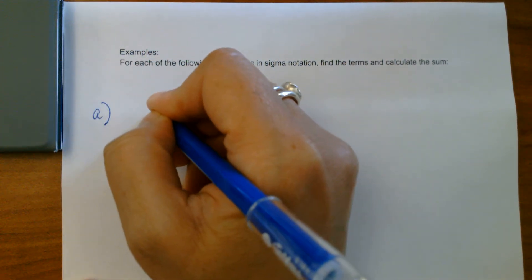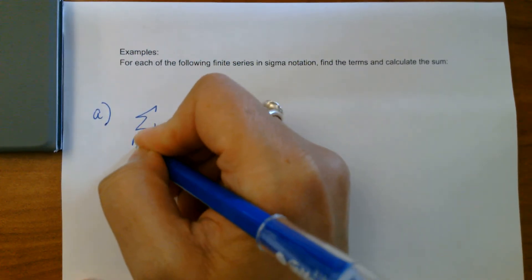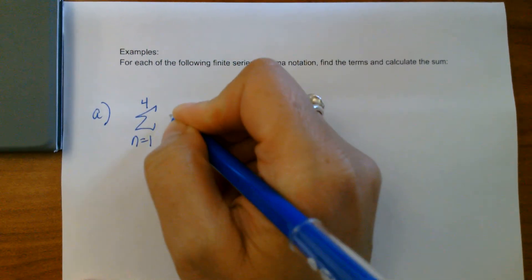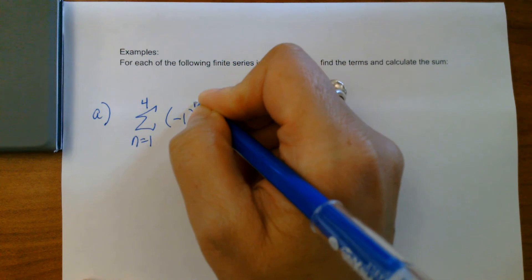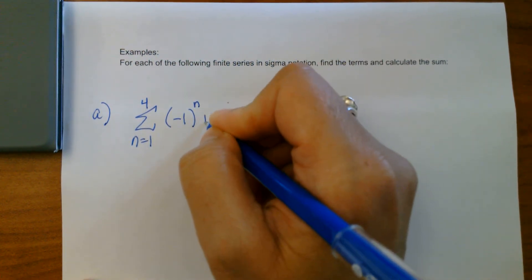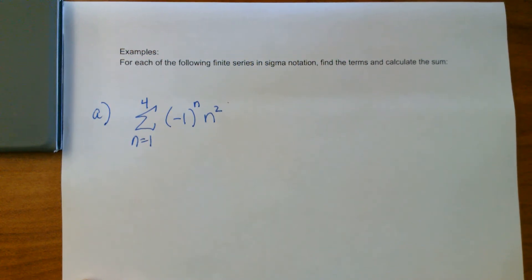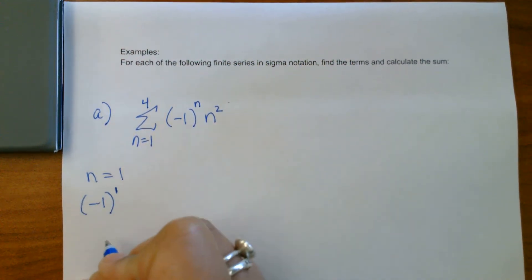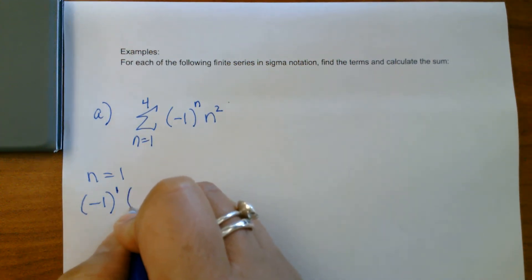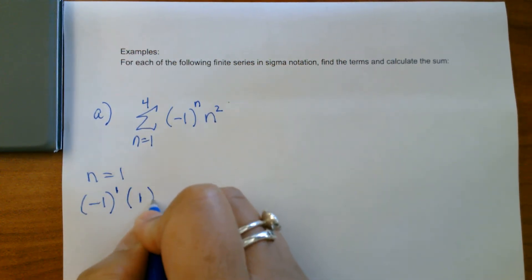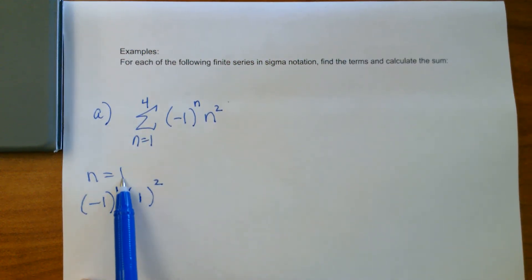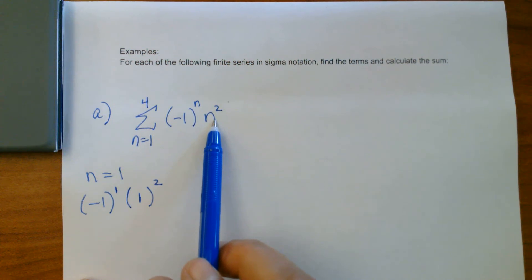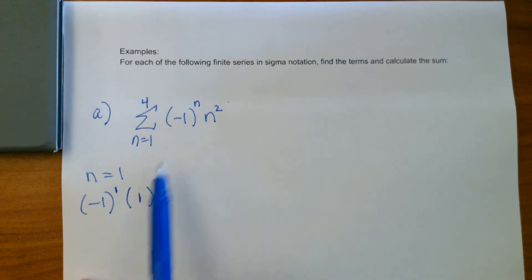So the first one we're going to do: we are doing the sum starting at one, going to four. And our general rule is negative one raised to the power of n times n squared. Step one, substitute it in — n equals one. So we're going to do parentheses, negative one, raised to the first. And now parentheses again representing this n — I'm going to put that at one squared. So notice, this n: when I substitute in the number one, I put it in parentheses and raise it to that second power.